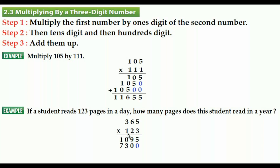Now we multiply the first number by the hundreds digit of the second number: 365. But don't forget to add two extra zeros at the end of the number. We have finished multiplying all three partial products. Now for step three — we have to add them all up. 5 plus 0 plus 0 makes 5, 9 plus 0 plus 0 makes 9, 0 plus 3 plus 5 makes 8.